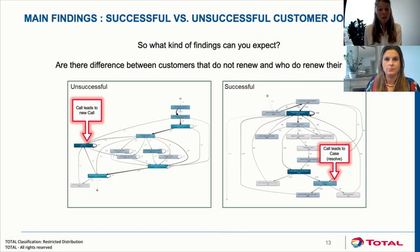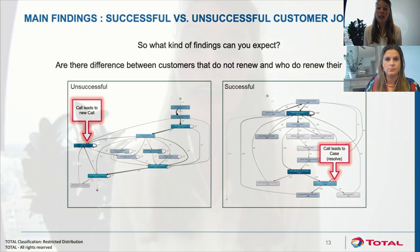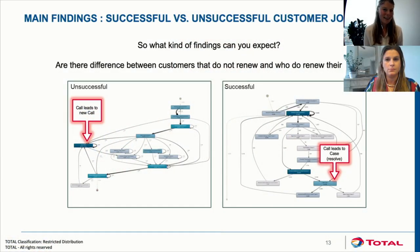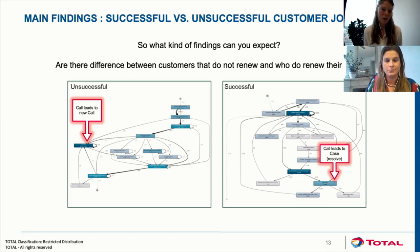In an unsuccessful customer journey, customers often had a call and then afterwards had another call — probably because a question was not answered fully or correctly. On the other hand, in a successful customer journey, a call leads to a case. A case in our organization refers to a customer request: if you call, we create a case, send it to the back office, and they work to resolve your question.